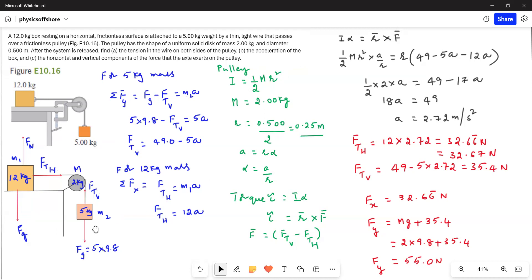For the 5 kg mass, we have the forces Fg acting downwards and then FtV, that means vertical tension upwards. Therefore, sigma F5 equals Fg minus FtV equals m2a. Plugging in the values, we get FtV equals 49 minus 5a.